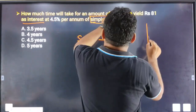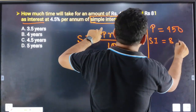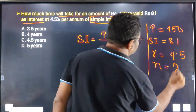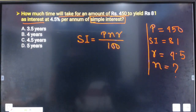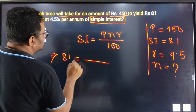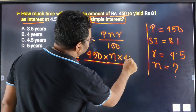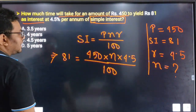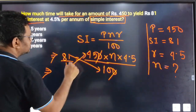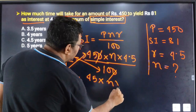The principle is 450 rupees, the simple interest is 81 rupees, and R is equal to 4.5 percent. So SI equals 81, P is 450, multiplied by N, multiplied by R which is 4.5, divided by 100. We cancel and cross-multiply: 810 is equal to 45 multiplied by N multiplied by 4.5.